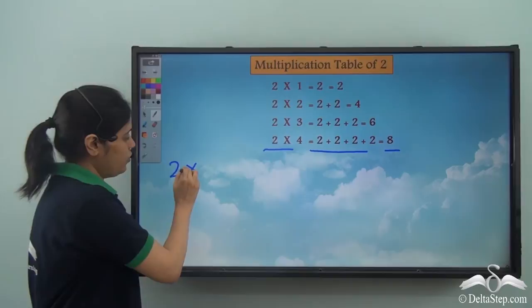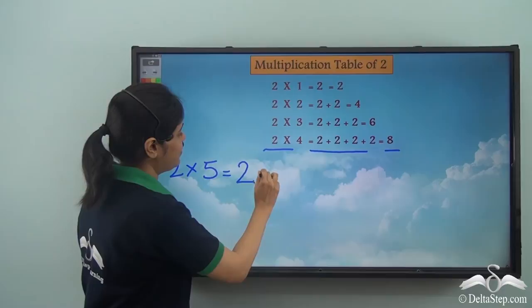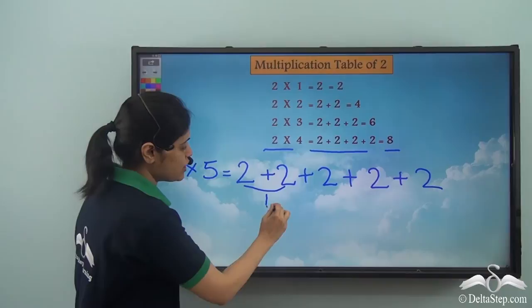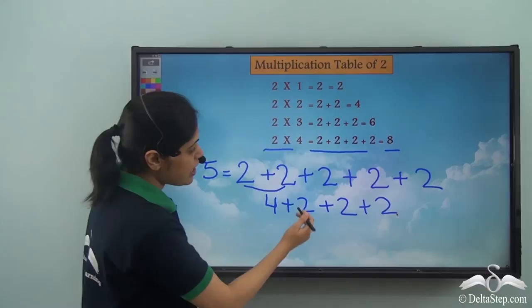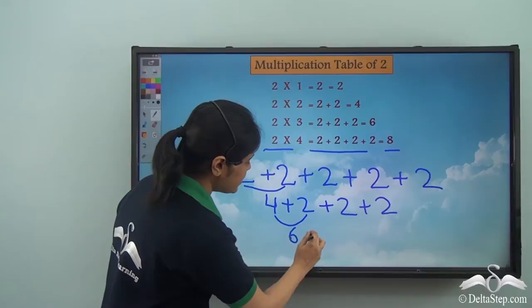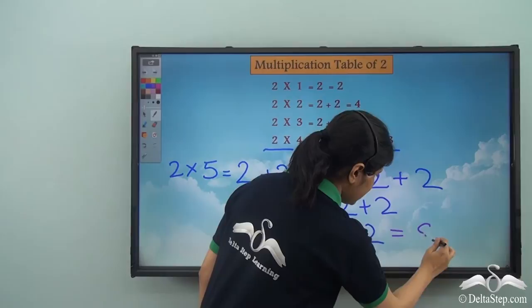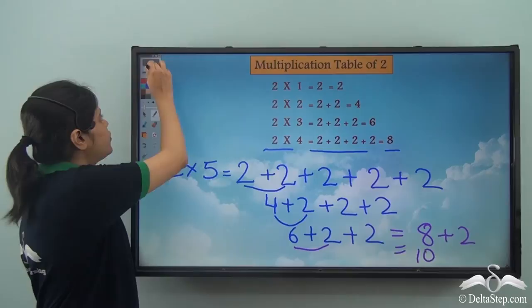Next is two into five. Let's add two five times. Two plus two is four, four plus two is six, six plus two is eight, and eight plus two is ten. So two into five is equal to ten. You see how difficult it is getting — this is how multiplication tables actually help us.